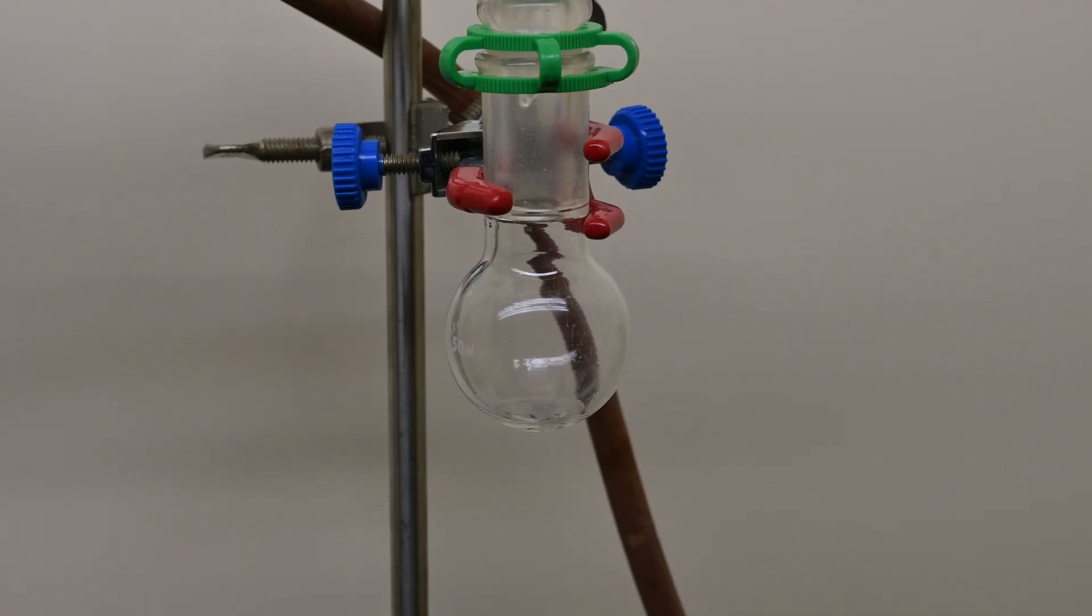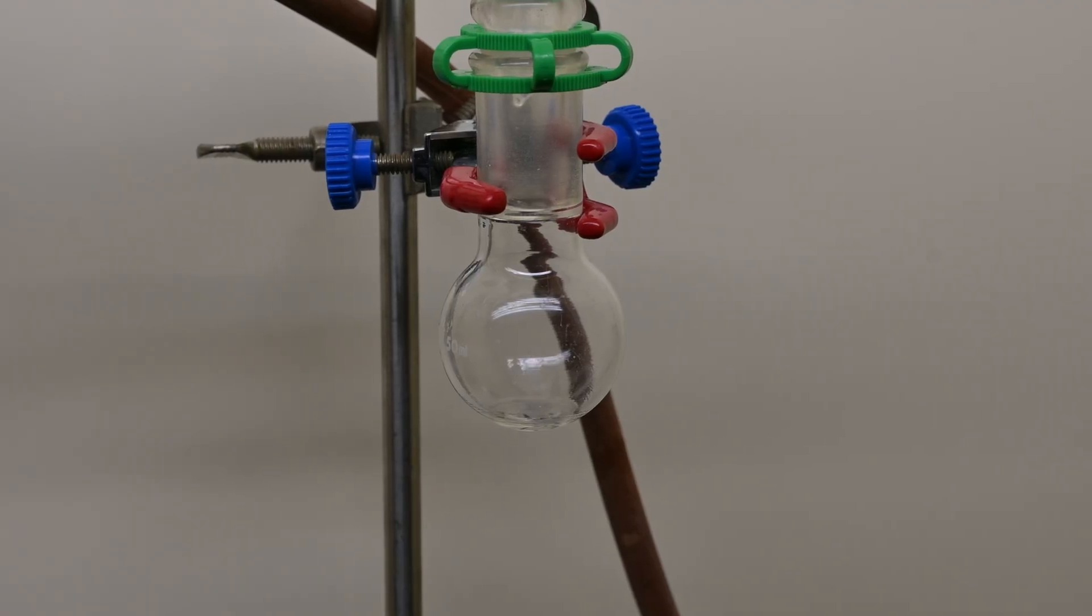By starting with the tall Vigreux column, we can gradually reduce its height as we separate the lower boiling point chemicals. This approach should help us achieve a pure distillate.